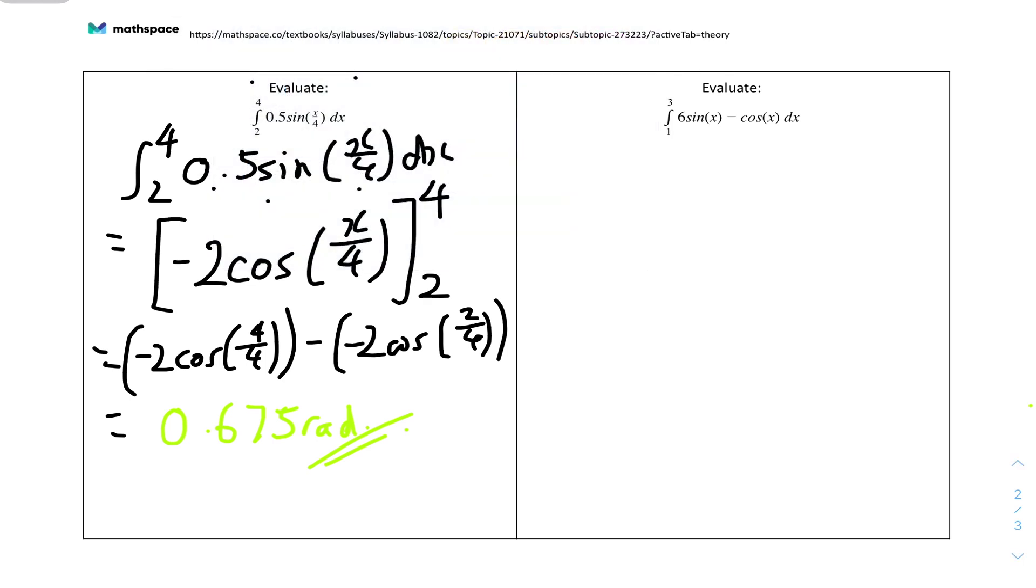And then the last question: Evaluate this as well. It's just like the question just now, but it has two trig functions. Let me do it step by step: the integral from 1 to 3 of 6 sine(x) minus cos(x) dx.